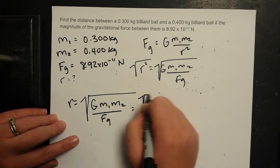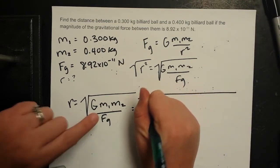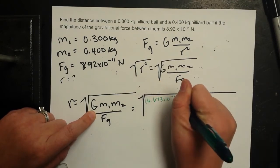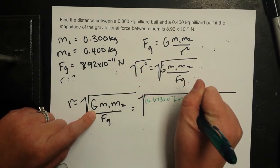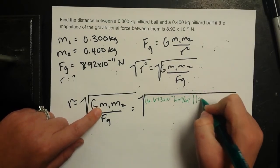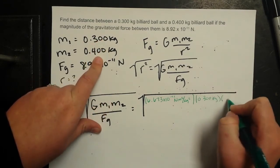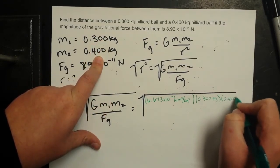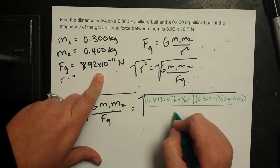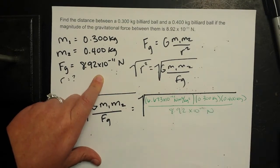Plug in what I know. And I'm going to use my calculator this time. So big G is 6.673 times 10 to the negative 11th newton meters squared per kilogram squared times 0.3 kilograms times 0.4 kilograms, all divided by my gravitational force which is 8.92 times 10 to the negative 11th newtons.